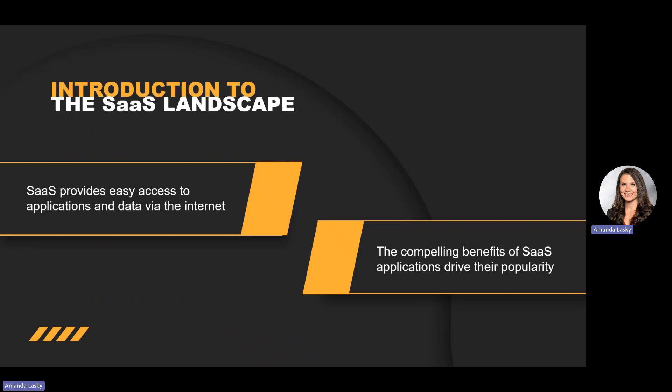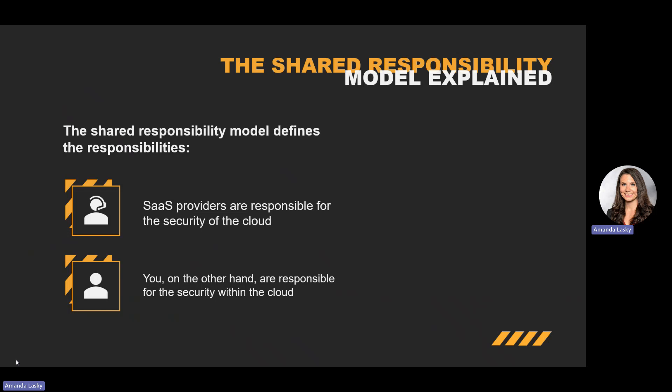The shared responsibility model is like a partnership agreement — it clearly defines who is responsible for what. Your SaaS provider is like a landlord, ensuring the building, or the cloud infrastructure, is secure and on par with industry standards. You are the tenant of the space, and keeping it secure is your responsibility. It's a straightforward concept: they handle the cloud, and you handle what you put into the cloud.